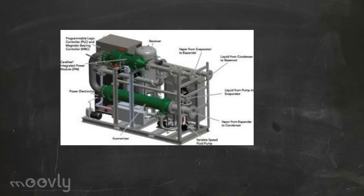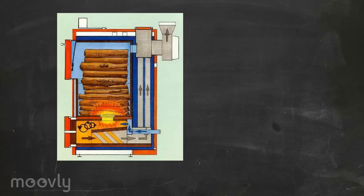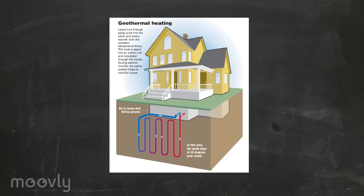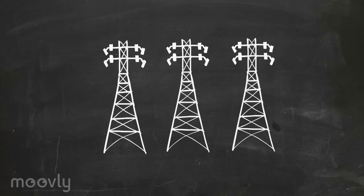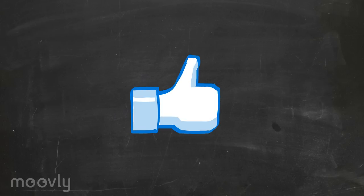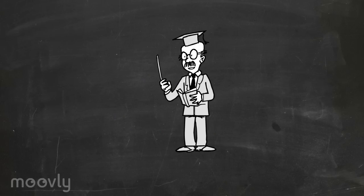For the Organic Rankine Cycle, the organic fluid allows Rankine Cycle heat to recover from low temperature sources such as biomass combustion, industrial waste heat, geothermal heat, and solar ponds. The low temperature heat is converted into useful work that can itself be converted into electricity. This pretty much sums up the Rankine Cycle. Please click like if you like this video.